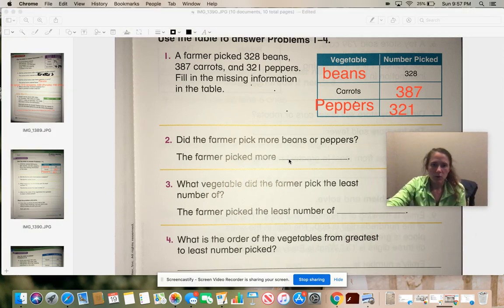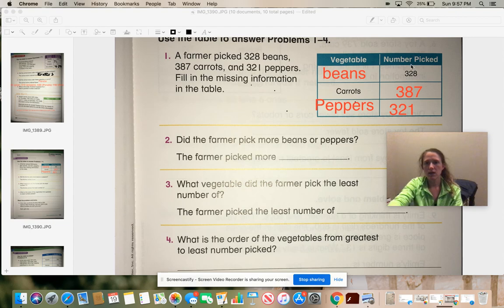The next one, what vegetable did the farmer pick least? Least is the littlest. So which one was the least picked? Which is the smallest number? Peppers, 321. So peppers was the smallest. And what is the order of vegetables from the greatest to the least? So you just have to write the vegetable down. So greatest to least. So biggest to smallest. So it would be carrots and then beans and then peppers because 387 and then 328 and then 321.